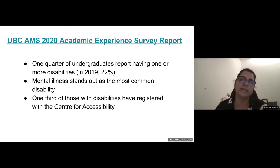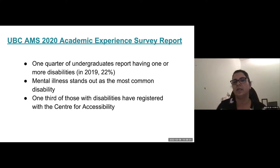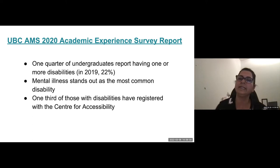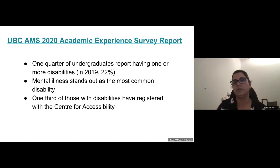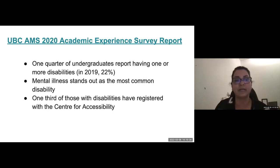The UBC AMS 2020 academic experience survey shows that one quarter of our undergrad students have one or more disability — about three percent more than the 2019 data — and mental illness stands out as the most common disability. One third of these people who self-identify have actually registered with the Center for Accessibility. So two thirds are not registered, don't look for accommodation, or may have difficulty identifying themselves as a disabled person. This gives you an idea of what kinds of students may be in your classrooms.